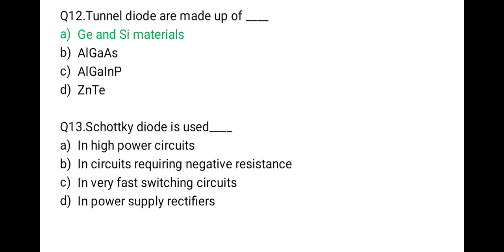The next question: the Schottky diode is used — first in high power circuits, second in circuits requiring negative resistance, third in very fast switching circuits, last in power supply rectifiers. The correct option is C: the Schottky diode is used in very fast switching circuits.